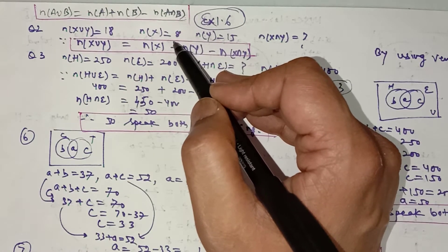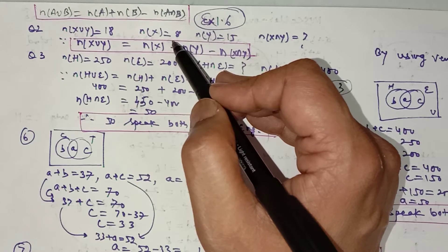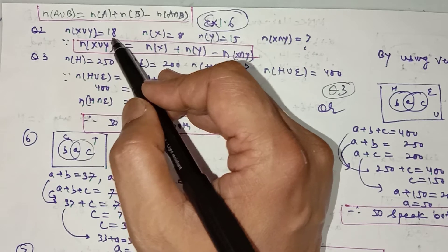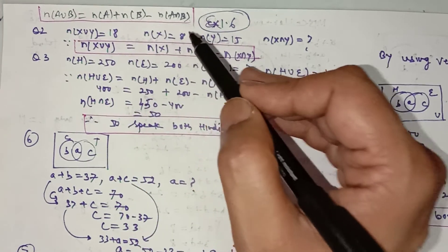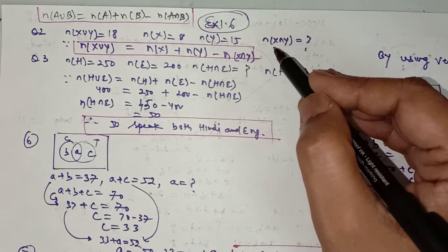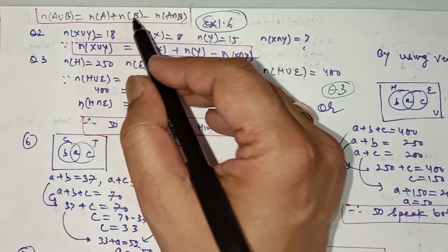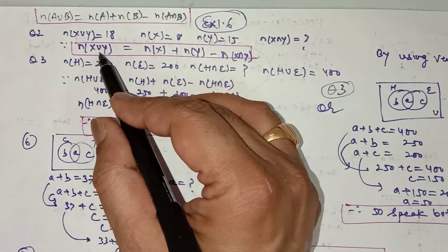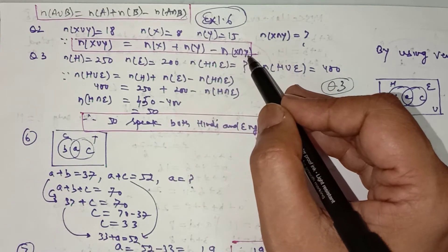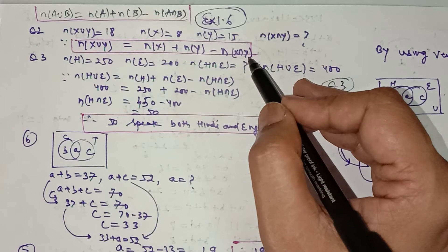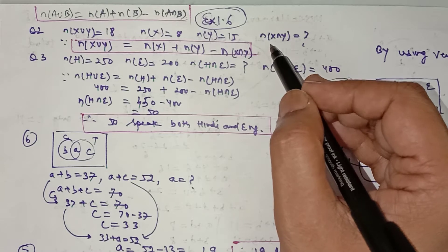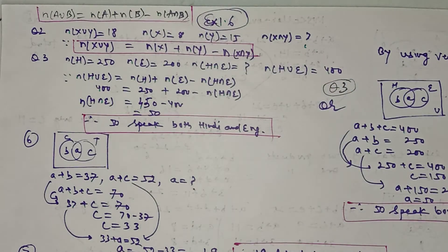In question number 2, if X and Y are two sets such that X∪Y has 18 elements, the number of elements in X is 8, the number of elements in Y is 15, and you have to find the number of elements in X∩Y. Use the formula: |X∪Y| = |X| + |Y| − |X∩Y|. Replace these values in the formula and you will get |X∩Y|.